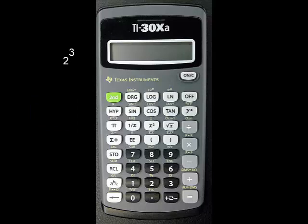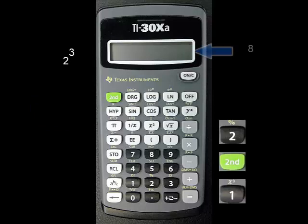To find 2 cubed, press 2, then 2nd, then 1. The answer 8 should appear on the screen.